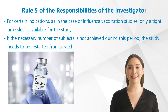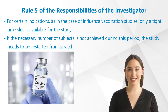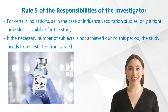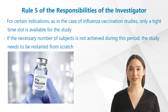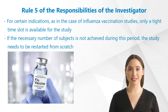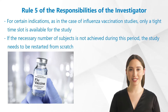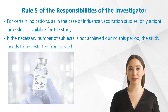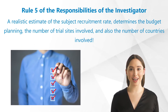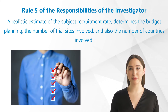For certain indications, as in the case of influenza vaccination studies, only a tight time slot is available for the study in the form of the influenza vaccination season, and if the necessary number of subjects is not achieved during this period, the study needs to be restarted from scratch in the following influenza season. Thus, a realistic estimate of the subject recruitment rate determines the budget planning, the number of trial sites involved, and also the number of countries involved.